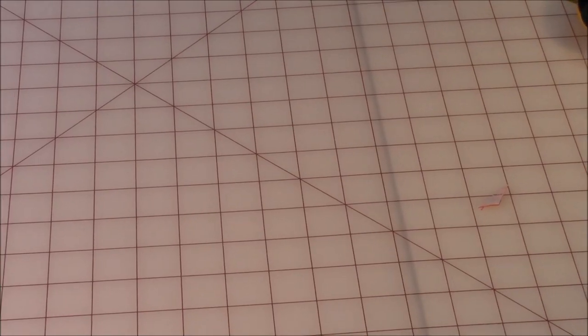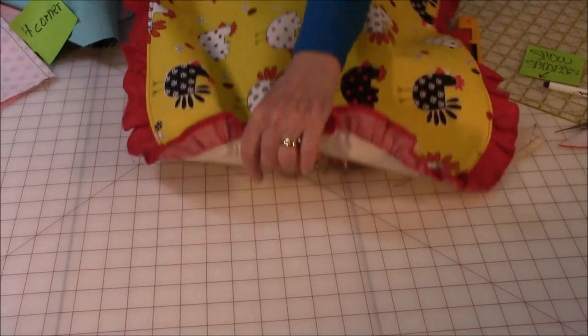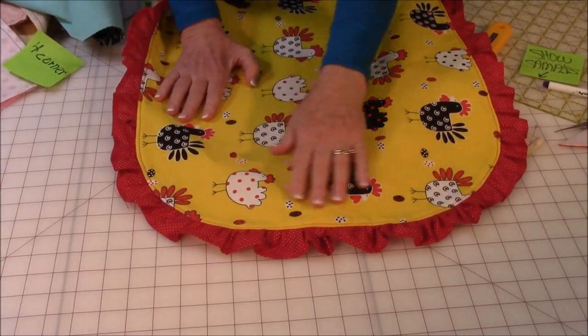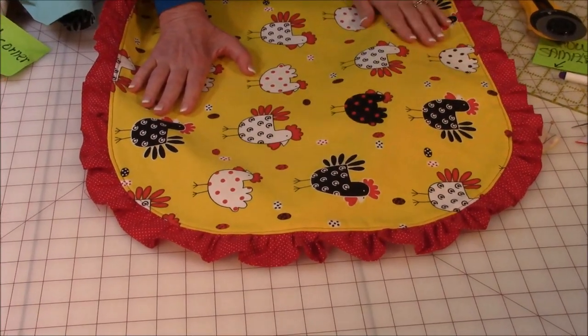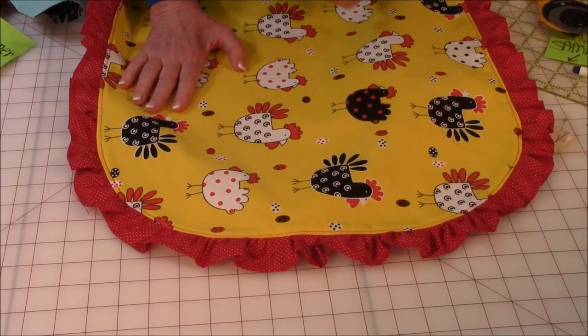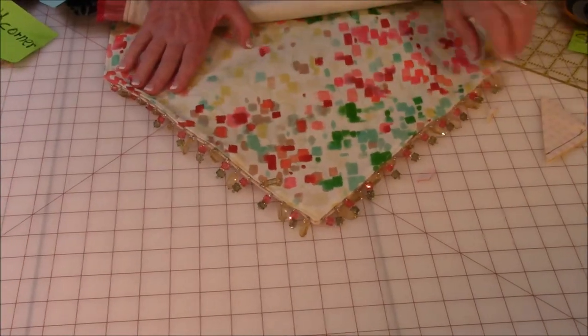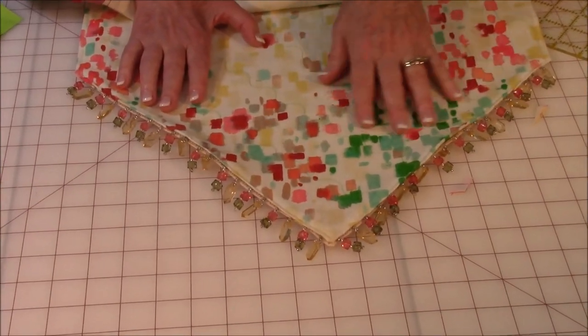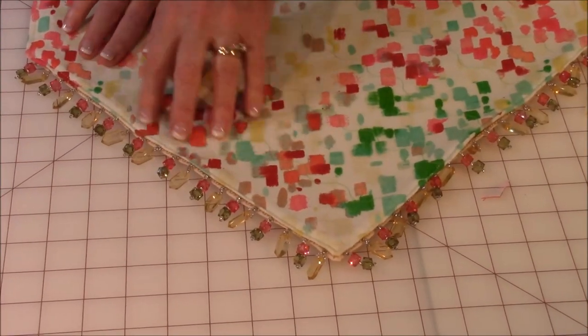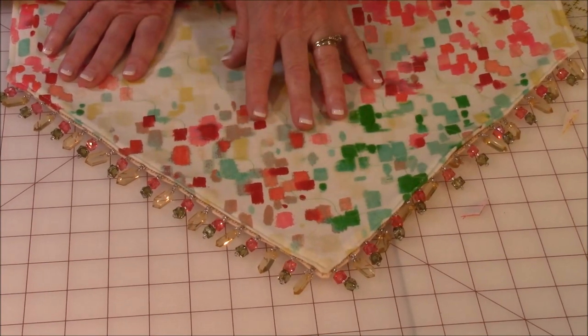Let me just show you a couple of samples of what it looks like when you do something different to it. Here is a rounded edge runner with a ruffle on it. Really cute little chickens. Great for a kitchen. Then this last one is a pointed runner with beads on the end. I absolutely love this runner. I fell in love with the beads before I fell in love with the fabric and I had to get it. So here again, great little project for you to do.